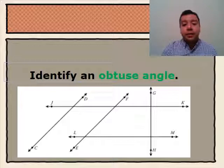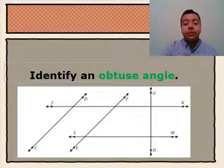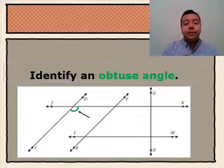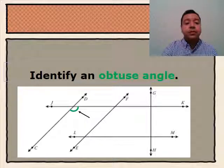The last angle that we'll be looking at is an obtuse angle. In the diagram below, we see an obtuse angle at the intersection of line CV and line JK. We know that this is an obtuse angle because it is greater than 90 degrees. The opening is larger than 90 degrees.